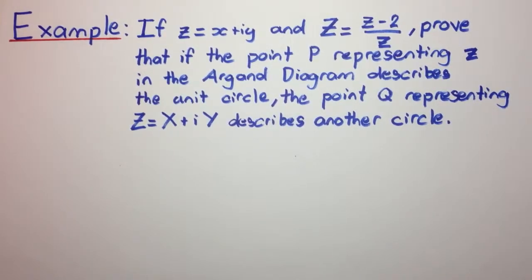Welcome to today's video everyone. If z equals x plus iy and capital Z equals z minus 2 over z, prove that if the point P representing little z in the Argand diagram describes the unit circle, then the point Q representing capital Z which equals capital X plus i capital Y describes another circle.